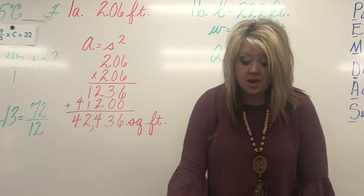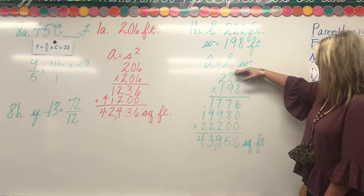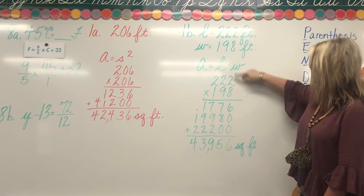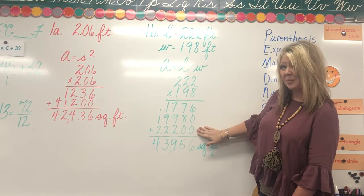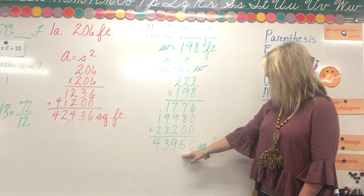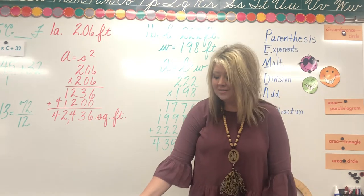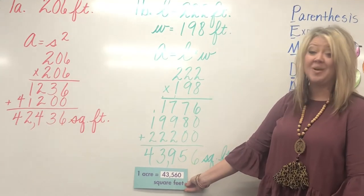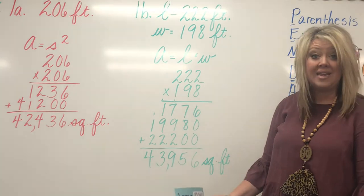And then letter B, you're doing a rectangle, area of a rectangle, so we use this formula. Can you say this with me? A equals L times W, length times width. I did the work here to try to save a little time on our video, and the answer equals 43,956 square feet. What was the square feet in an acre? 43,560. So this one is larger than an acre, so for letter B it would be yes.